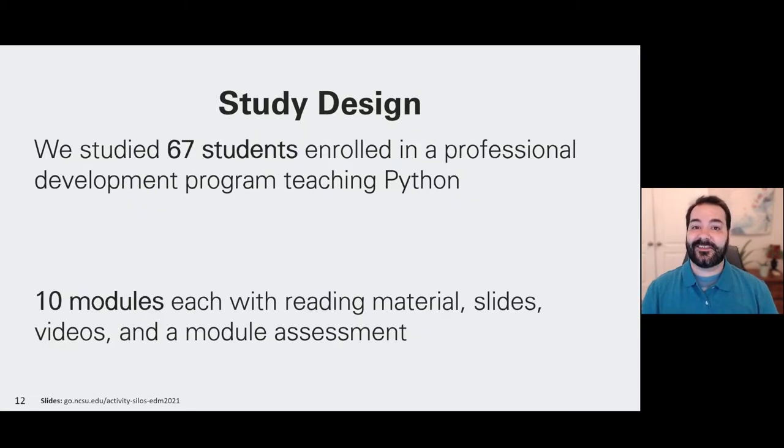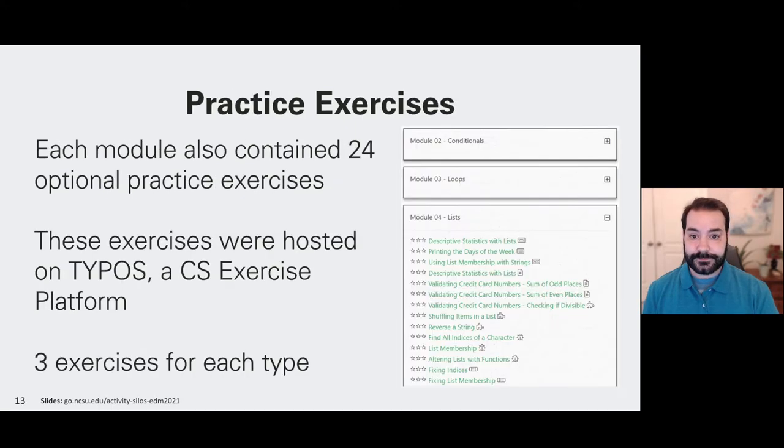So for our study, we had 67 students enrolled in a professional development course teaching Python and data science online. This was a prerequisite for a larger AI program. This course had 10 modules. Each module had reading materials, slides, videos, and a module assessment. You had to receive a passing grade on that assessment to move on to the next module. And to be classified as a completer of the program, you needed to pass all 10 modules.